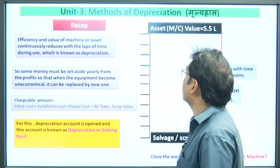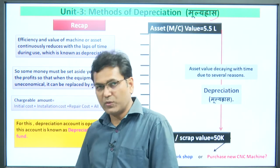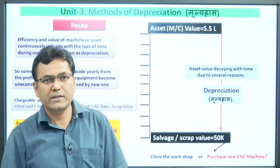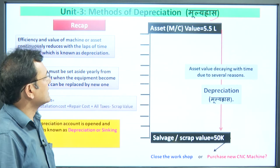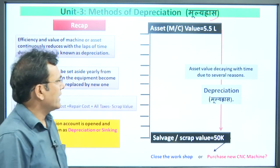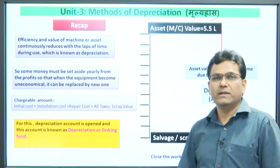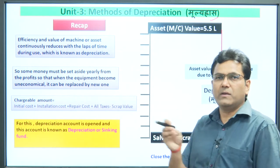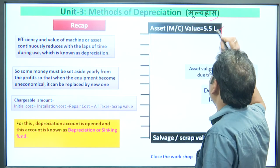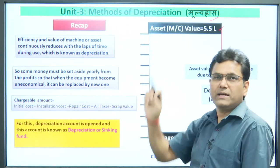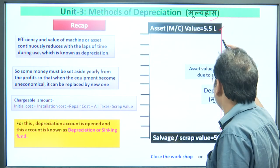We will revise the previous lecture and the next topic on depreciation. In Hindi, depreciation is known as 'mulya hras' — meaning the decrease or decay in value of something. In our previous lecture, we took an example where we started a business, opened a workshop, and invested a total of 5.5 lakh rupees to purchase and install a CNC machine.